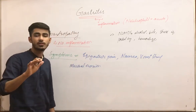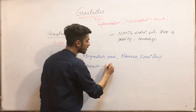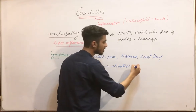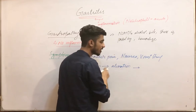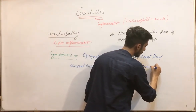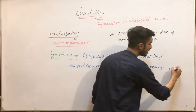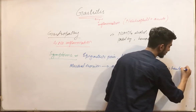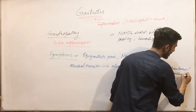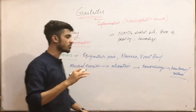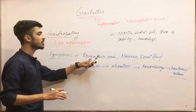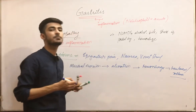If the disease is not treated, mucosal erosion may lead to ulceration. This ulceration, if the disease continues, may lead to hemorrhage. This hemorrhage may lead to hematemesis — blood in the vomiting — or melena, meaning blood in the stool.